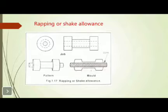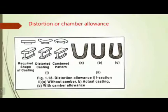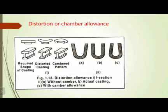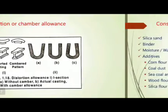Coming to the wrapping or shaking allowance, this is one allowance we take into consideration in metal casting. Next is the distortion or camber allowance. On screen we can observe three diagrams: one is the I-section without camber, showing the actual casting, and the third is with camber allowance — with camber allowance we can easily obtain the desired shape without any disturbance.